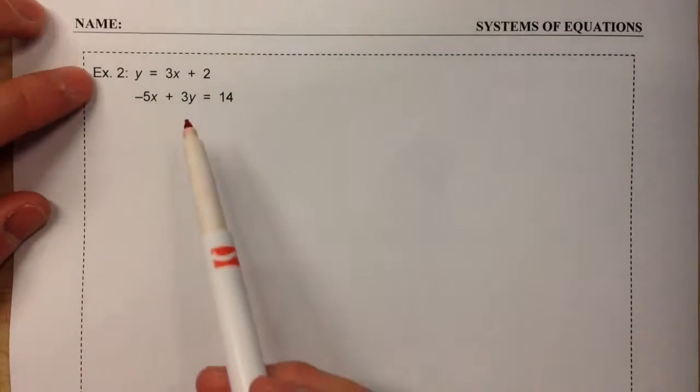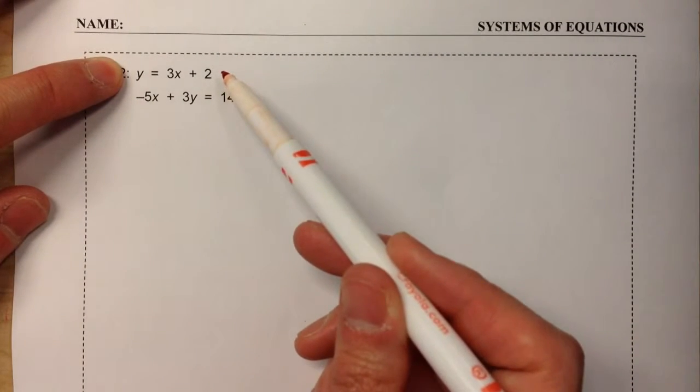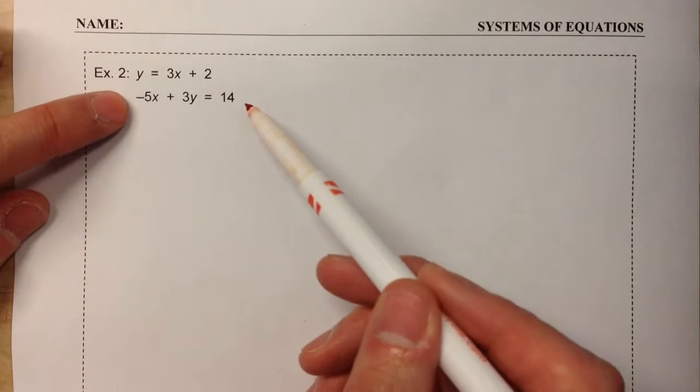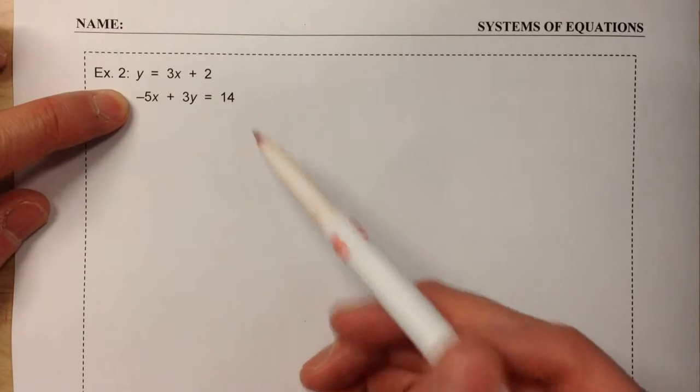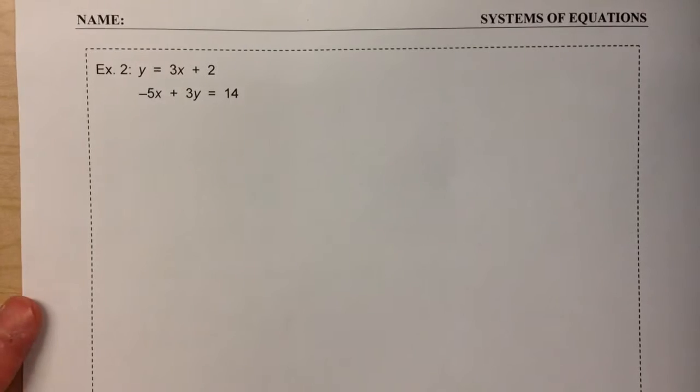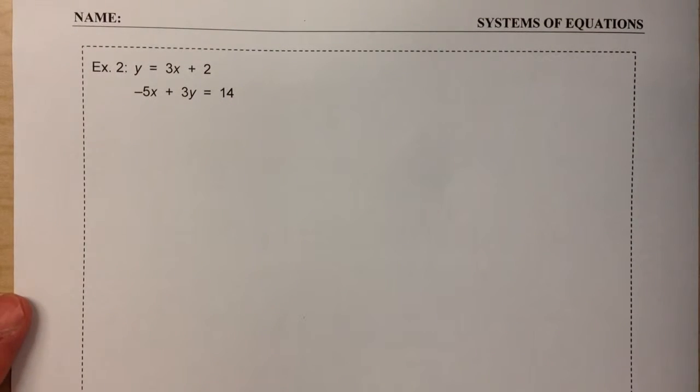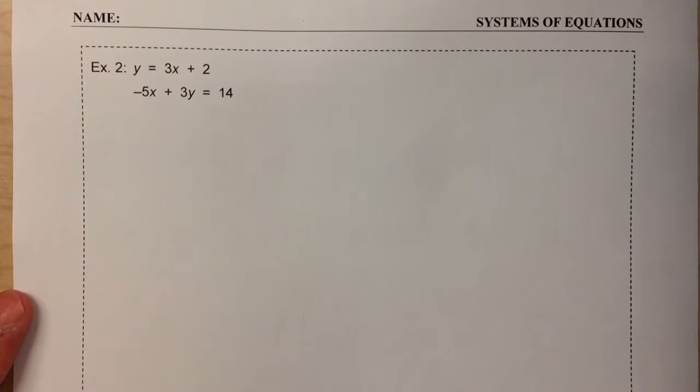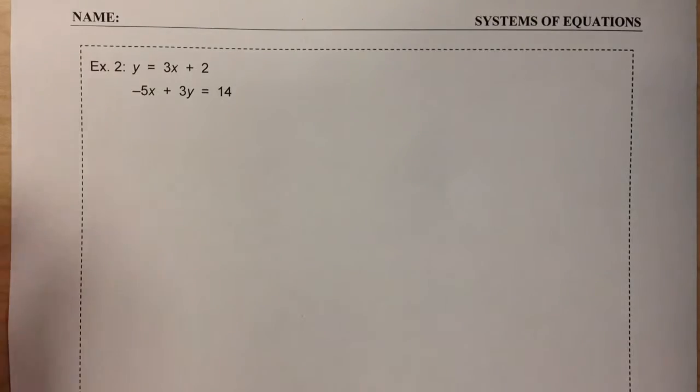Notice in this example, we've got one equation in slope-intercept form, but the second equation's in standard form. We're still going to use the same method we've been using, substitution, but it's just going to look a little different.